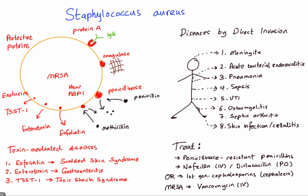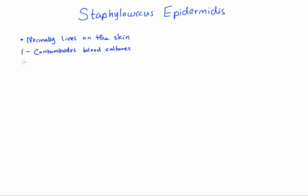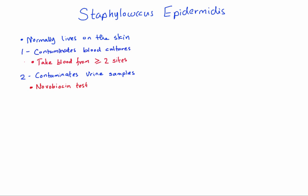Let's look at Staph epidermidis. From its name, it lives on the skin as part of normal flora, which means it's going to contaminate blood cultures — so remember to take blood cultures from more than two sites. It will also contaminate urine samples, which matters because Staph saprophyticus is a common cause of UTIs. When you see Staphylococcus in a urine sample, you're not sure if it's Staph saprophyticus (cause of UTI) or just contamination by Staph epidermidis, so you do the novobiocin test.